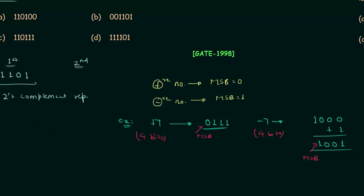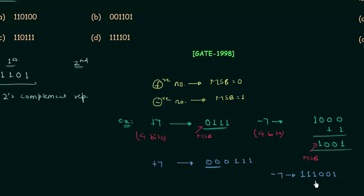Now we can represent +7 and -7 using 6 bits. Plus 7 is represented as 000111 — we added 2 extra 0's as sign bits, and we can add as many sign bits as we want. For -7, we have 111001. We added 2 extra 1's because for a negative number the sign bit is equal to 1. So this is the representation of +7 and -7 using 6 bits.